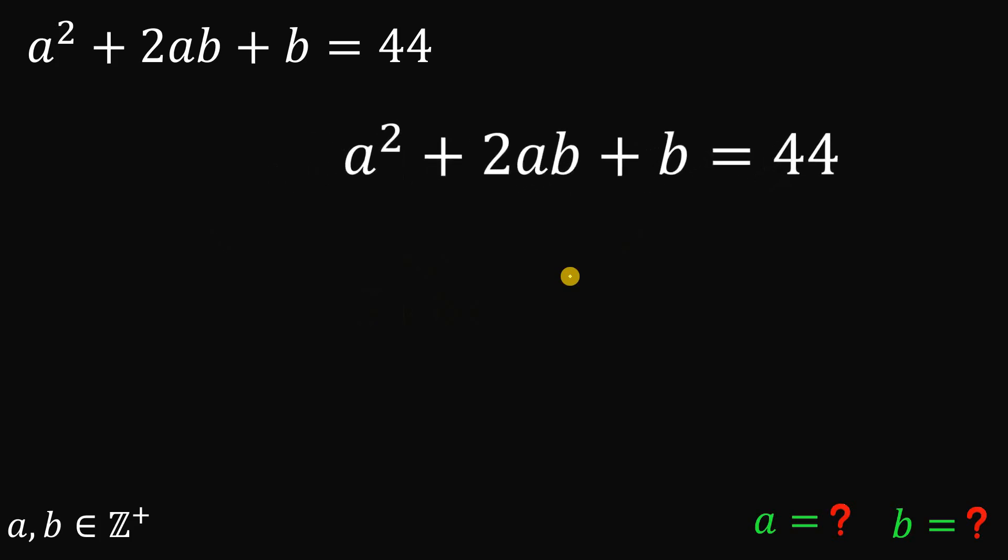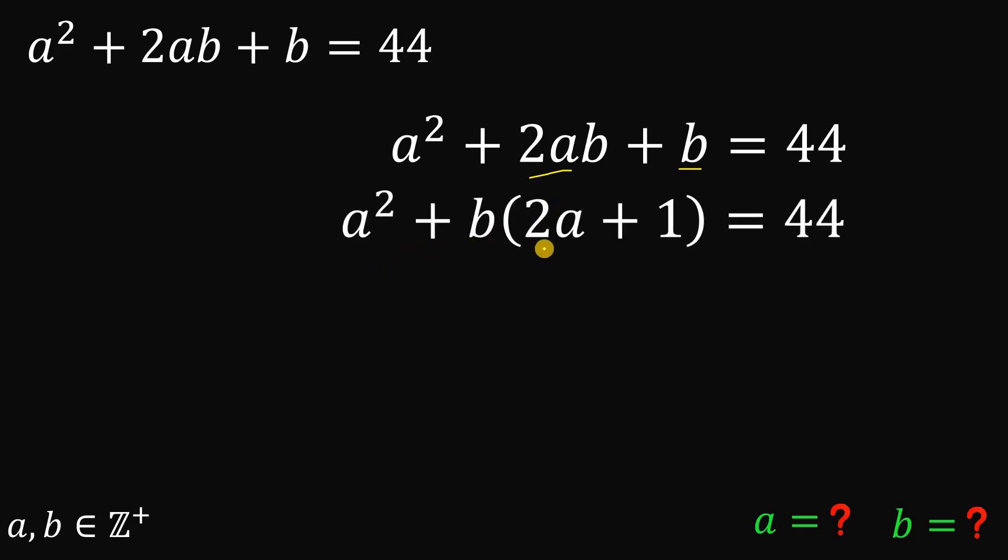So now let's focus on this. We will do the obvious one because we have a common factor of b in these two terms. So let's factor out b. So a squared plus b multiplied by 2a plus 1 equals 44.